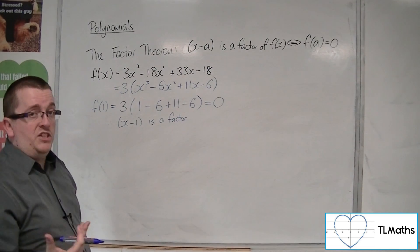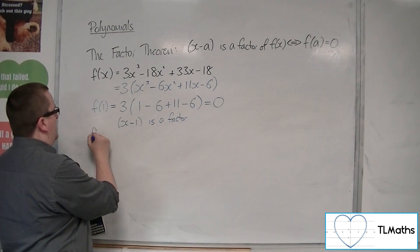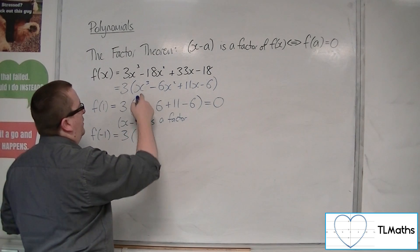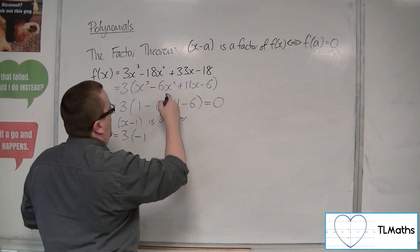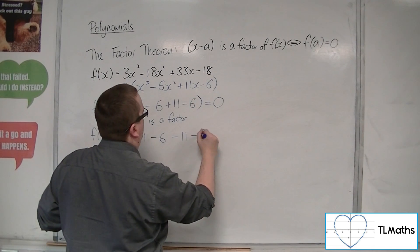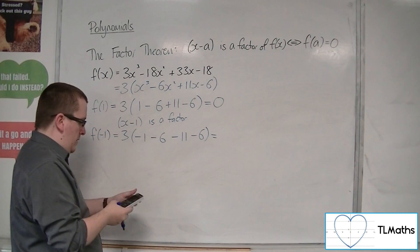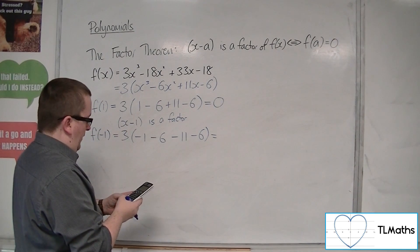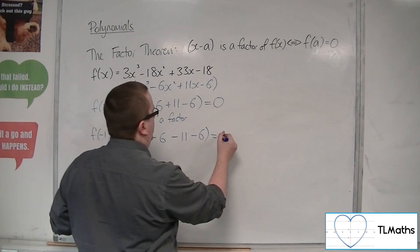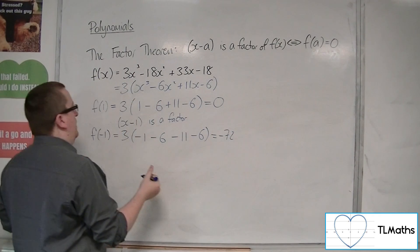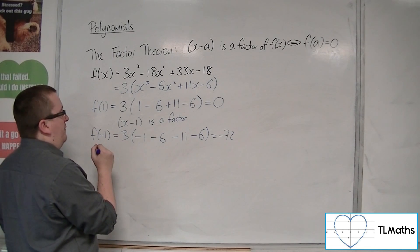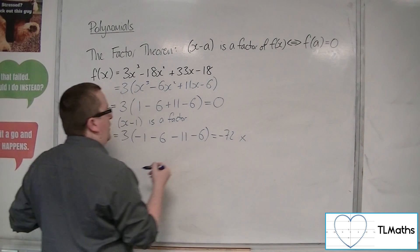OK, so next up, I would try minus 1. So f of minus 1 will be 3 lots of, well, minus 1 cubed is minus 1, take away 6, take away 11, take away 6. So minus 1, take away 6, take away 11, take away 6, and then times that by 3 is minus 72. OK, so f of minus 1, x plus 1 is not a factor. So I can't use that one.